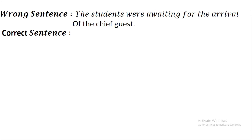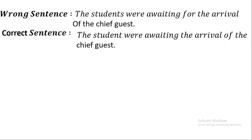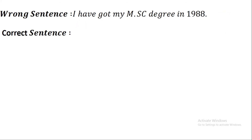Our next wrong sentence is: 'The students were awaiting for the arrival of the chief guest.' It is a wrong sentence. The correct sentence is: 'The students were awaiting the arrival of the chief guest.'